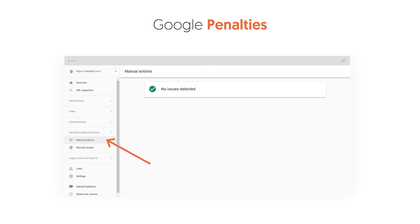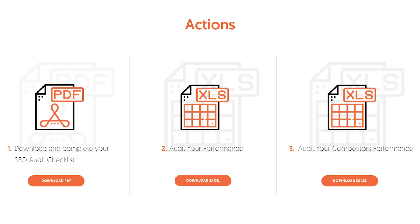Last but not least, check for penalties. Go to Google Search Console, look at manual actions, and make sure there are no issues detected — if there are, fix them. Before we end, make sure you go to neilpatel.com/training and download the following worksheets to fix all your site errors: first, download and complete your SEO audit checklist; then download and audit your performance using that Excel sheet; and finally, audit your competitor's performance with that Excel sheet, as it breaks down how to do everything step-by-step.